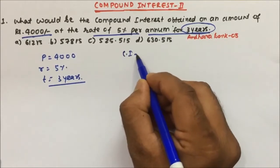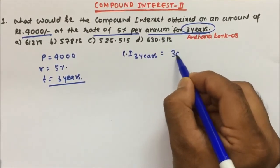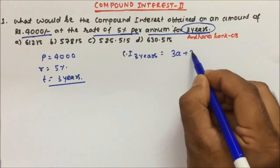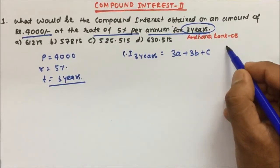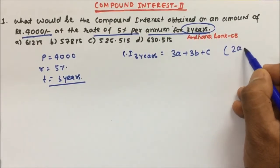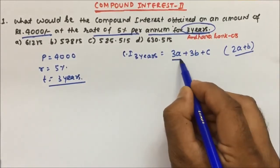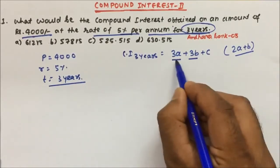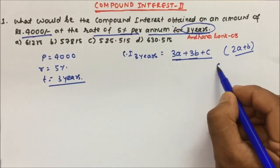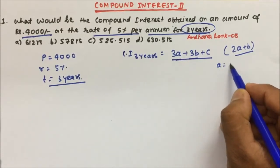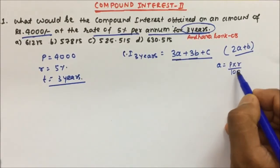The formula for compound interest for 3 years is equal to 3a plus 3b plus c. If you remember, for 2 years it was 2a plus b, and for 3 years it is 3a plus 3b plus c, derived from the binomial theorem. Here, a is equal to P into r by 100.